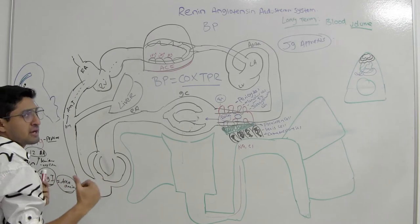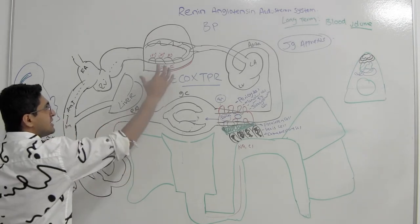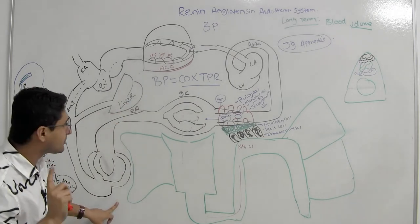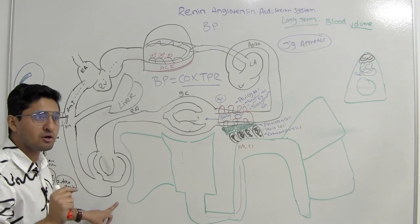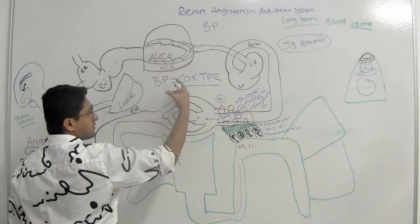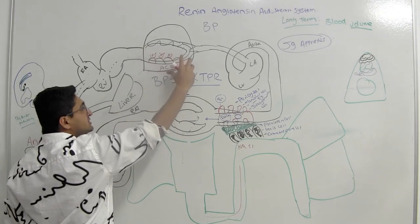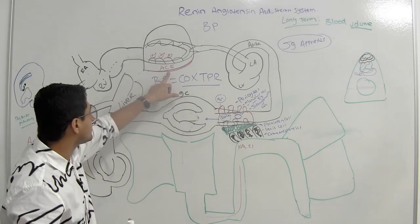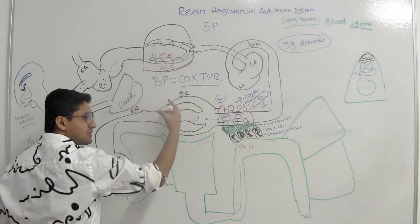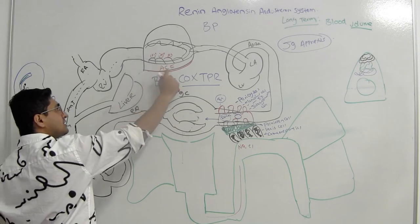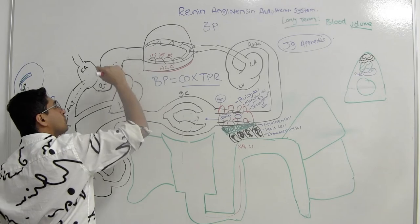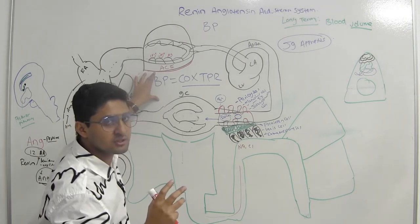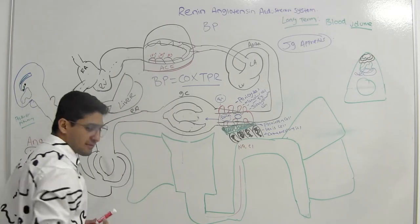ACE is not exclusively in the lungs — it is also found in the endothelial cells of the kidneys, brain, and other tissues. However, the density is greatest in the pulmonary capillary beds, which is why we associate ACE primarily with the lungs. Many drugs called ACE inhibitors — like enalapril or lisinopril — are given to prevent conversion of angiotensin I to angiotensin II.